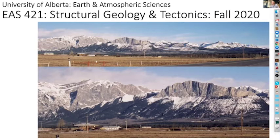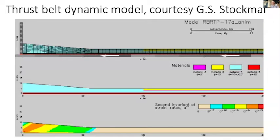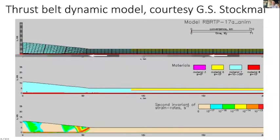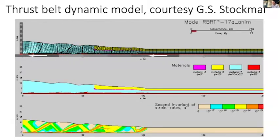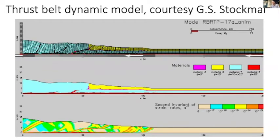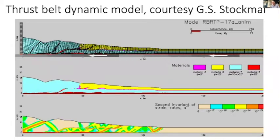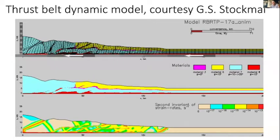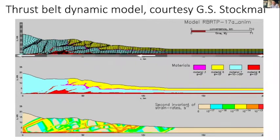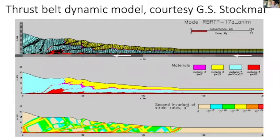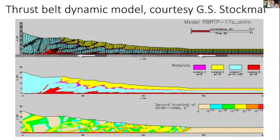In EAS 421, we're going to have a look at how those structures came to be. This is a dynamic model of a thrust belt produced by a colleague of mine, Glenn Stockmal, at the Geological Survey of Canada, and it attempts to show how it's possible for one big mass of rock to be thrust over another during movements of the plates, during convergence.